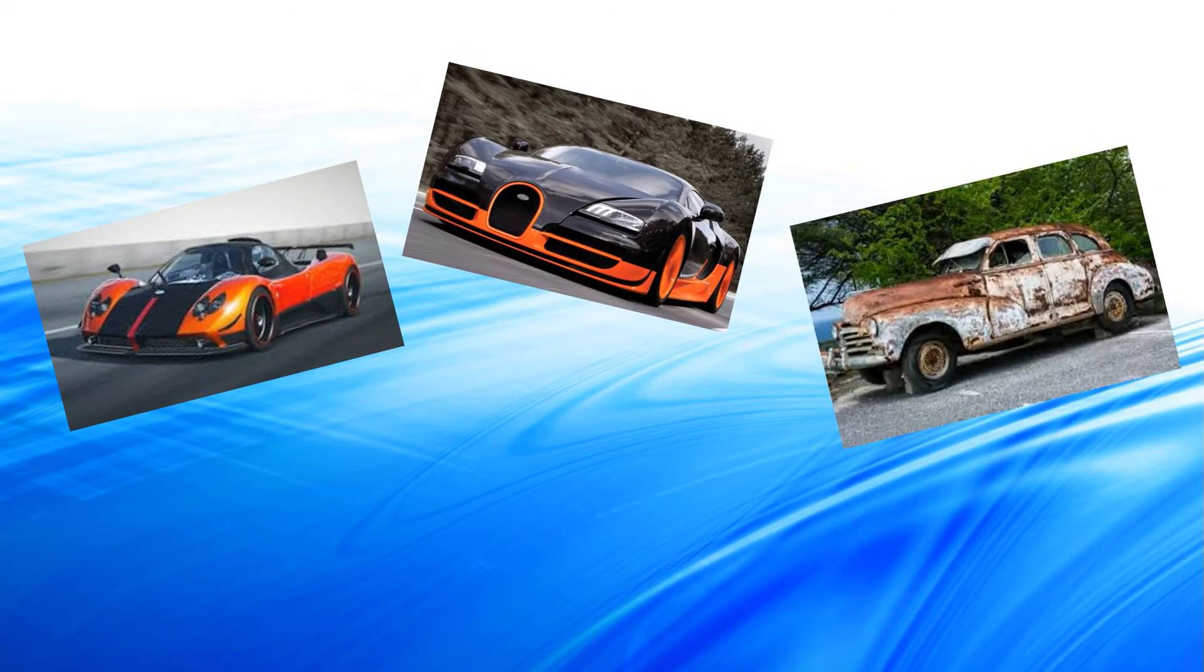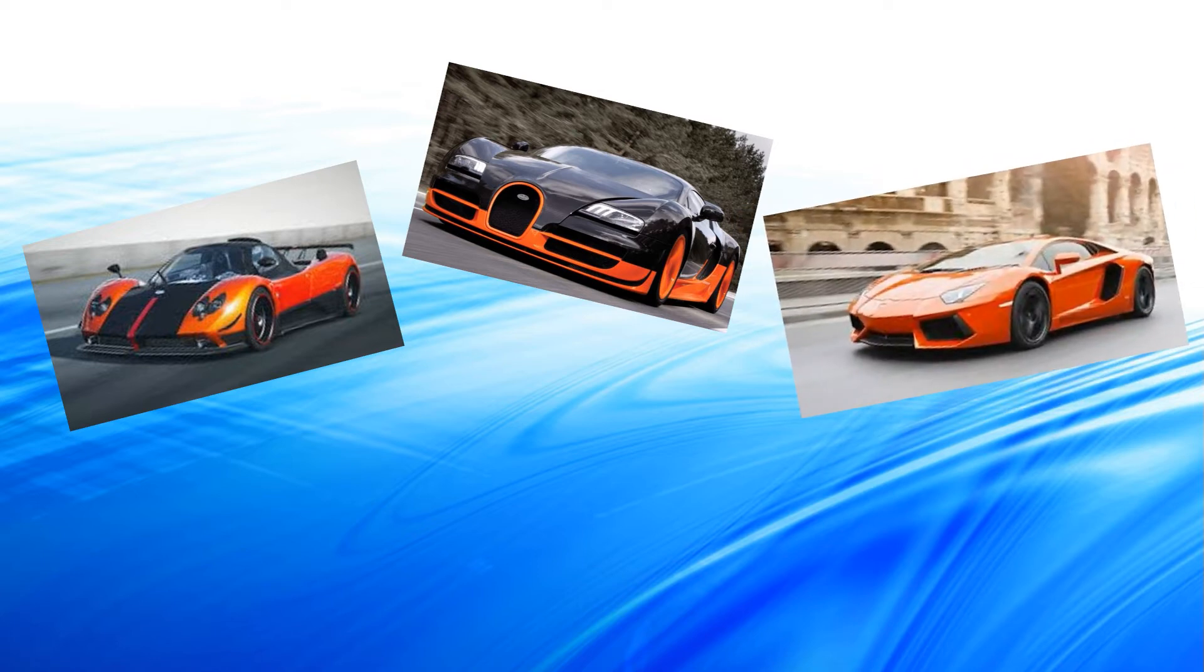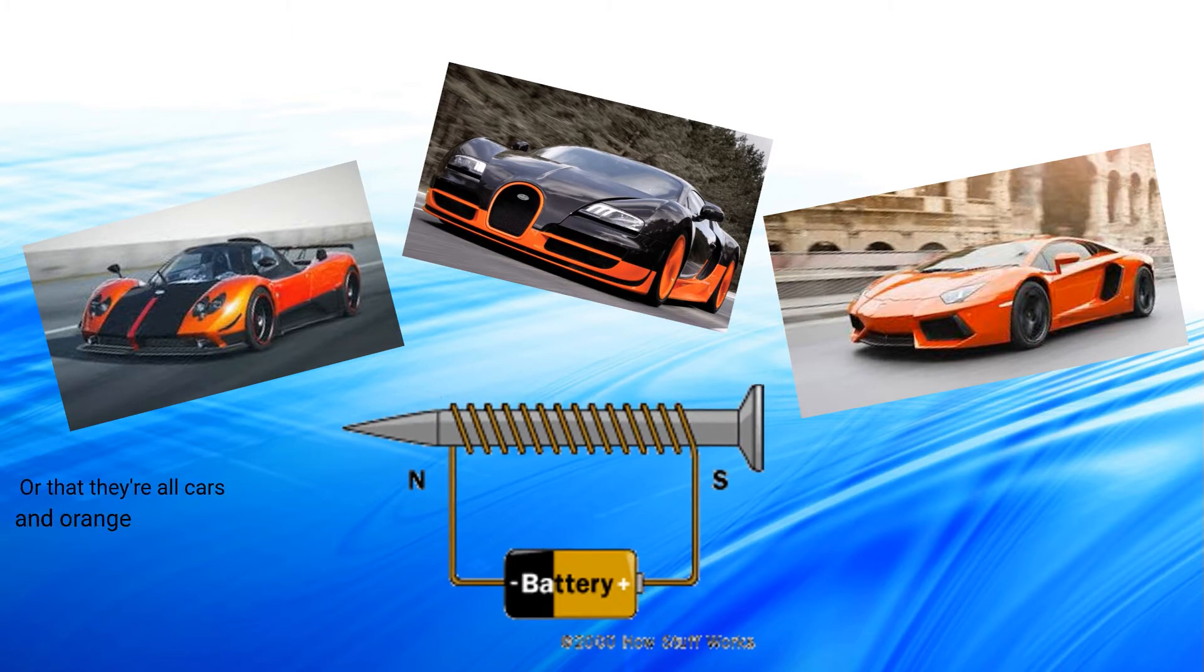What do a Pagani Zonda Roadster, a Bugatti Veyron, and a Lamborghini Aventador all have in common? Now, although there are many things you could say, I'm sure your first guess would be that they use electromagnets, specifically in the ignition system and the alternator.